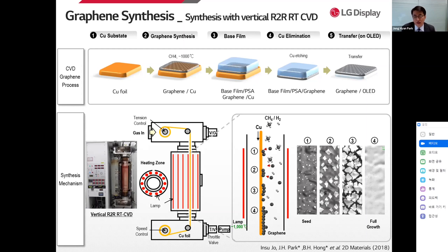Specifically, after synthesizing graphene on copper with vertical direction, we make a transparent base film and pressure-sensitive adhesive hybrid film as a transferring media. After copper wet etching, we laminate the base film/pressure-sensitive adhesive/graphene hybrid film onto targeted OLED devices in a vacuum atmosphere. This process can be directly applied to the currently used OLED display manufacturing process because of its simplicity and process adaptability.